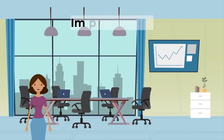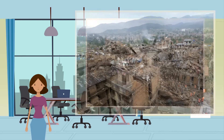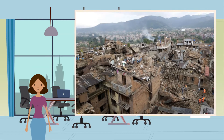Now let's contrast the impacts in Nepal — a developing country. Firstly, the primary impacts: 9,000 were killed and 20,000 injured; 8 million people were affected — one-third of Nepal's population.